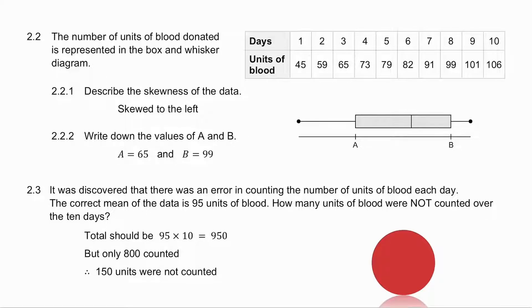2.2.1 asks you to describe the skewness of the data. You will notice the box and whisker diagram is far more spread to the left, so it is skewed to the left. The values of A and B. A is the lower quartile. B is the upper quartile. I have 10 sets of data, so my median is in the middle. So to get the lower quartile, I take the data that is below the median, and I take the median of that. So I get that A is 65. To get the upper quartile, I take the data that is above the median. The median of that is 99. So B's value is 99.